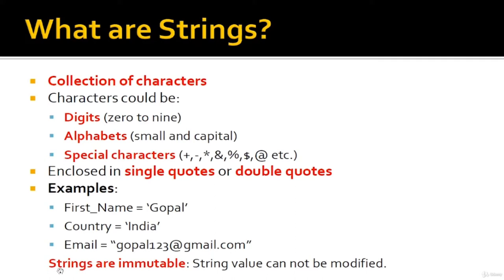Strings are immutable. It means a string's value cannot be modified once it is declared. For example, when we initialize the first_name variable with the value Gopal, we cannot modify that later on. That is called immutability.